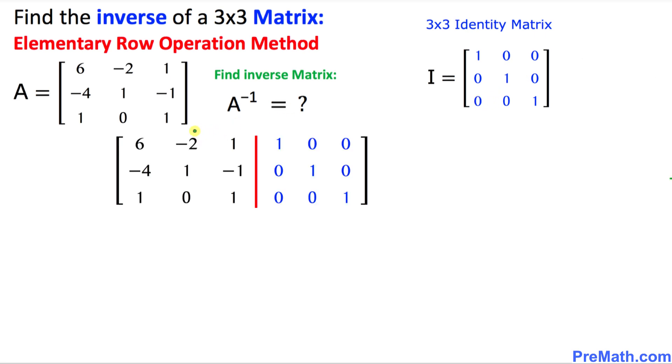In order to perform this elementary row operation we need an augmented matrix. On one side I just put down matrix A and on the right hand side as you can see this is our identity matrix.